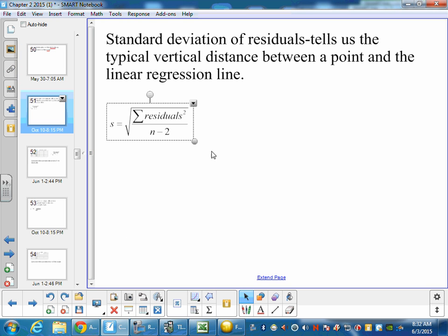The first one, the standard deviation for the residuals, tells us how far a typical vertical distance is between the point and a linear regression line. So it basically just tells you how far away points are from the line that we're predicting for them to be. And we want our standard deviation to be low if we wanted to predict it well.